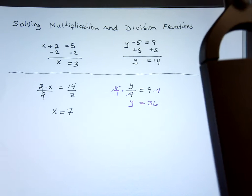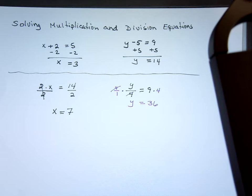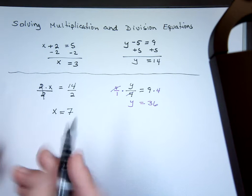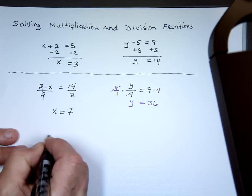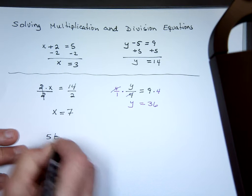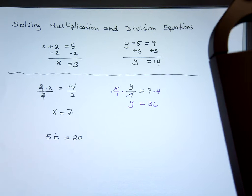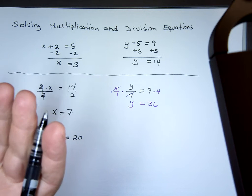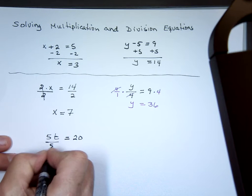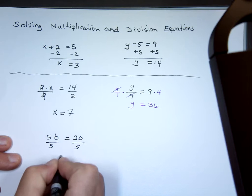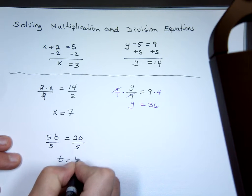So that's what we're going to be doing today. 5t equals 20. To solve for t, what do we do? Divide by what? 5. t equals 4.